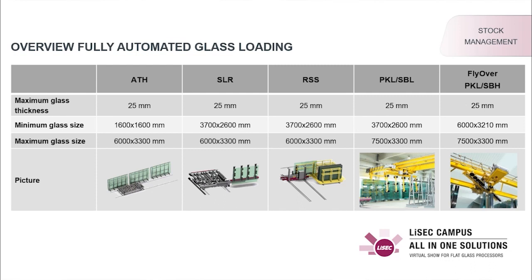The next machine would be the RSS, a rack shuttle system — a compact solution which needs less space, capable of handling a very high number of different glass types. It's also the fastest solution for serial production with the same glass type. But if you want to produce very different glass types, the system is getting slow.